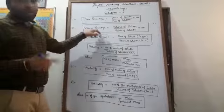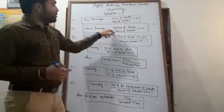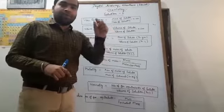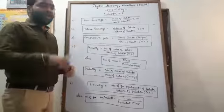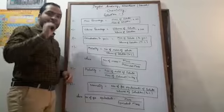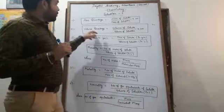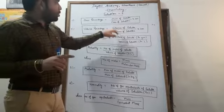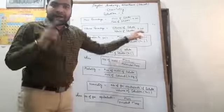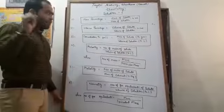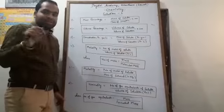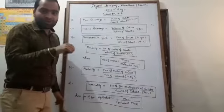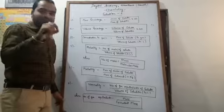The next one is volume percentage. Volume percentage means the volume of solute which is present in 100 ml of solution. So the formula to calculate volume percentage will be volume of solute divided by volume of solution multiplied by 100. There is one point to remember that the volume percentage term is especially used for those solutions in which the solute is liquid.